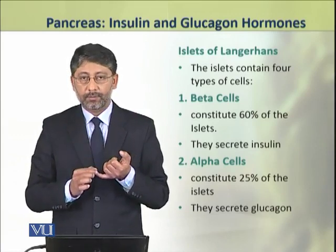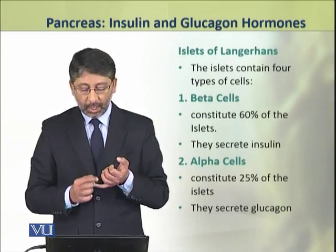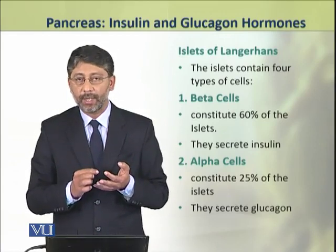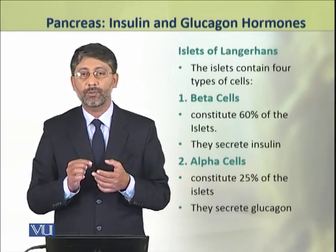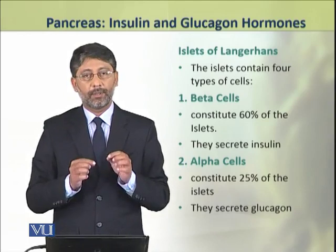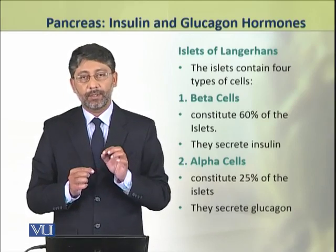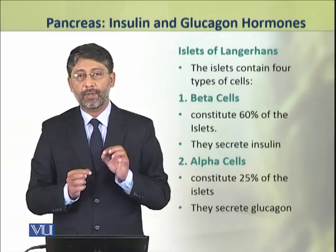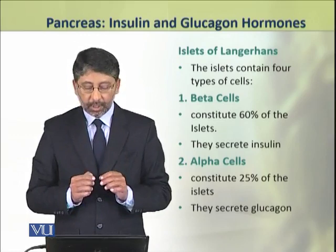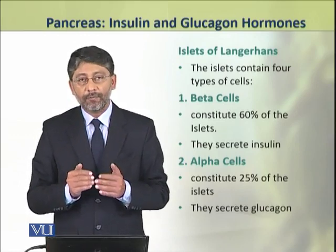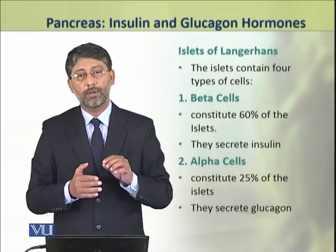First, beta cells which constitute about 60% of the islets and they produce the hormone insulin. The second type of endocrine cells in the islets of Langerhans are alpha cells, which constitute about 25% of the islets and produce the hormone glucagon.